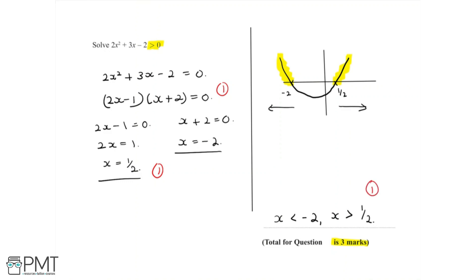We were only able to do this by drawing a quick sketch to see exactly what we're talking about when we say that 2x squared plus 3x minus 2 is more than zero. Getting the final answer of x is less than minus 2 and x is greater than a half gives us that third and final mark needed for full marks in this question.